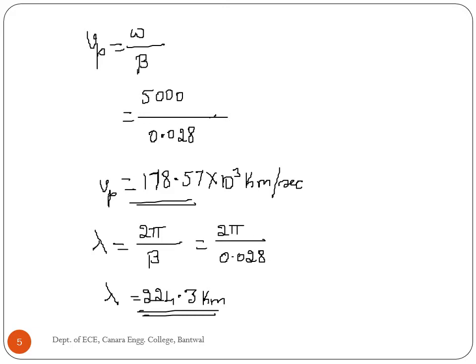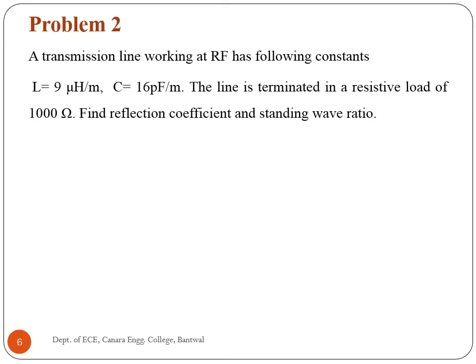So here we have solved the first problem. Second problem: a transmission line working at RF has the following constants — L equal to 9 micro henry per meter, C equal to 16 pico farad per meter. The line is terminated in a resistive load of 1000 ohm. Find the reflection coefficient and standing wave ratio.